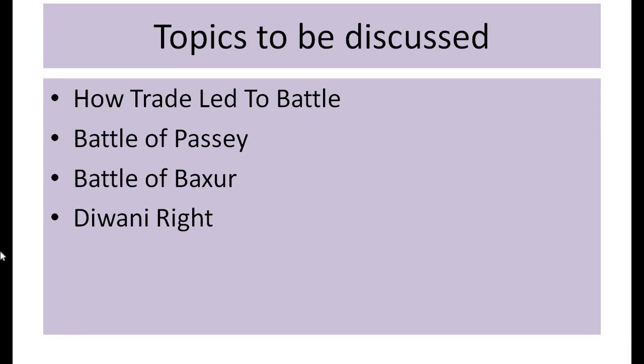This competition amongst the companies pushed up the prices, and the East India Company rose to become more powerful. It first started its trade with Bengal, and in 1651 it set up an English factory on the bank of the river Hooghly. Then in 1696, it began building a fort around the settlement.